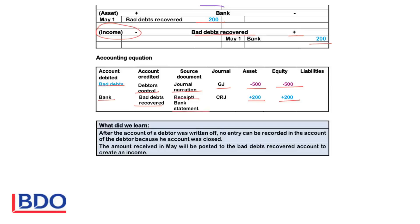What did we learn? After the account of a debtor was written off, no entry can be recorded in the account of the debtor because his account was closed. The amount received will be debited in the bank account to increase the money in the bank, and bad debts recovered will be credited to create an income that will increase the profits.